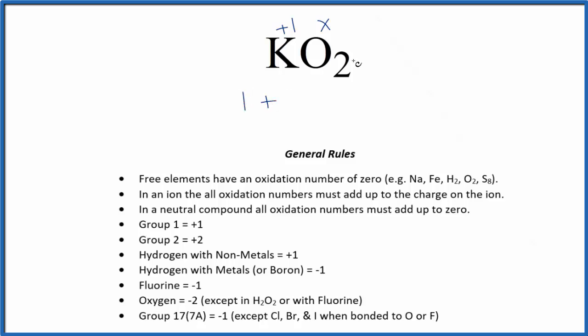One, that's potassium, plus two times x equals zero because it's neutral. So two x would equal negative one. We divide both sides by two. X equals negative one half.